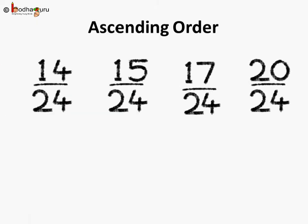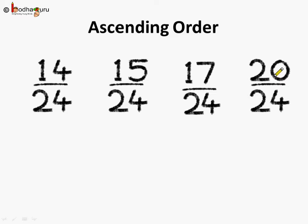Now, since the denominators are the same, in order to arrange them in ascending order, we just check and place the numerators in ascending order. So, the fraction 14 by 24 comes first, then 15 by 24, then 17 by 24, and then 20 by 24.